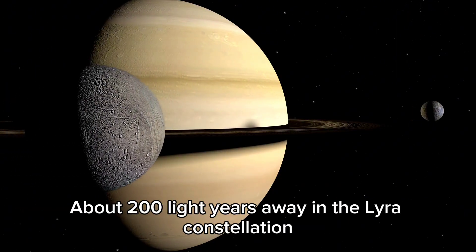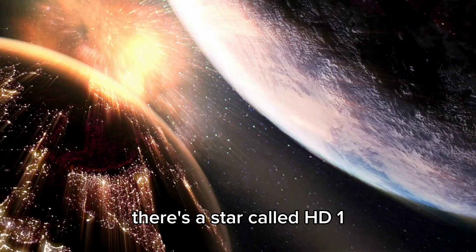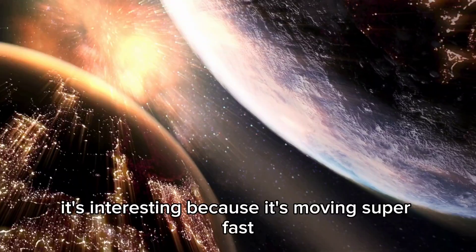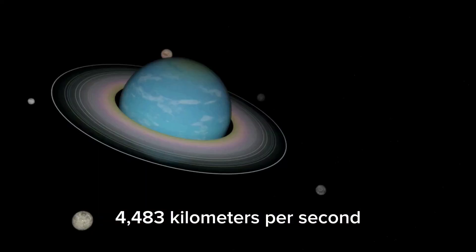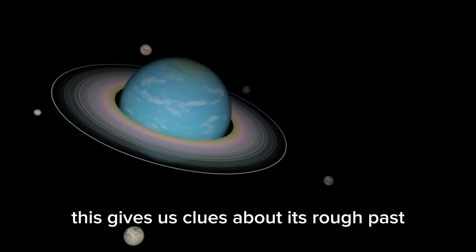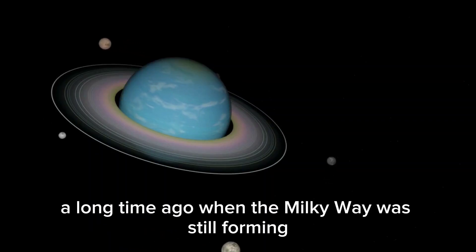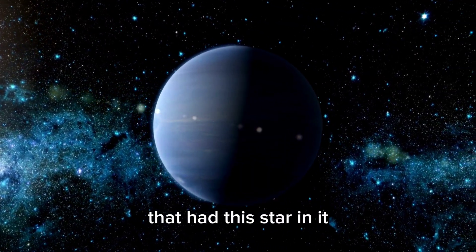About 200 light years away in the Lyra constellation, there's a star called HD 14283. It's interesting because it's moving super fast, 4,483 kilometers per second. This gives us clues about its rough past. A long time ago, when the Milky Way was still forming, it crashed into a smaller galaxy that had this star in it.